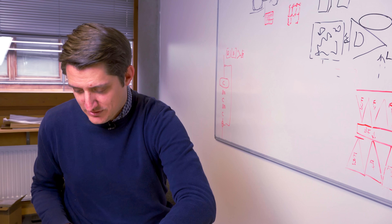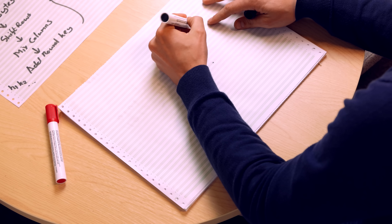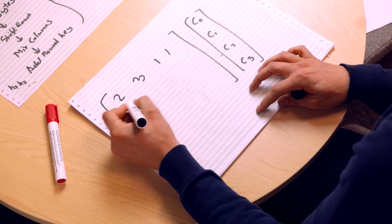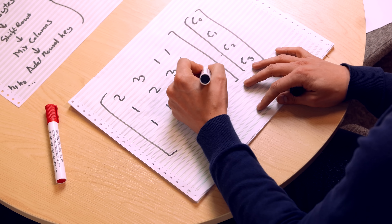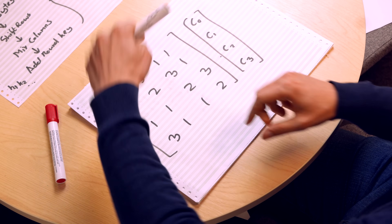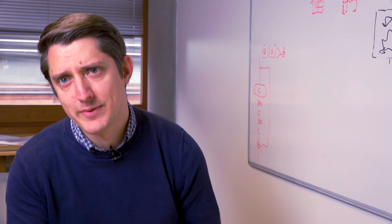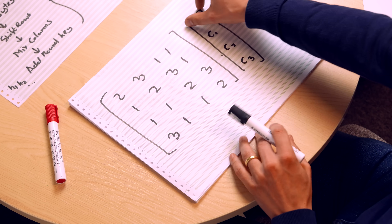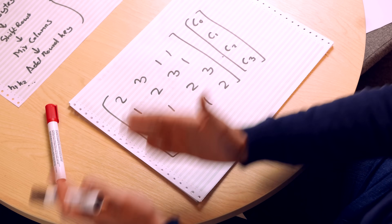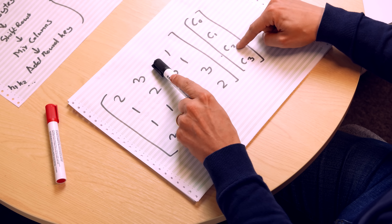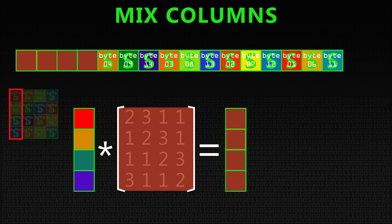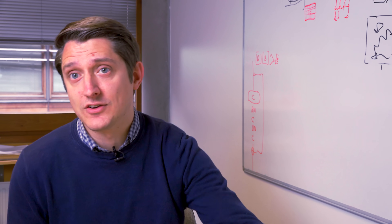Mixed columns is done using a matrix multiplication. For some column C0, C1, C2, C3, we multiply it as a vector by a matrix. This matrix is: [2, 3, 1, 1 / 1, 1, 2, 3 / 3, 1, 1, 2 / 1, 2, 3, 1]. These numbers are big and jumbled enough that something interesting happens, but small enough that this is quite fast. The matrix multiplication produces another vector — replacing this column with a combination of all of its elements. There is also a reverse inverse matrix that does the exact opposite when you want to decrypt.